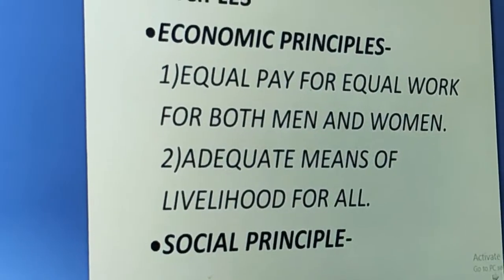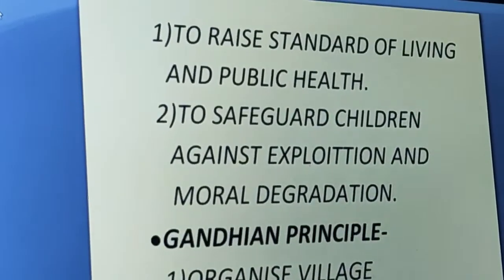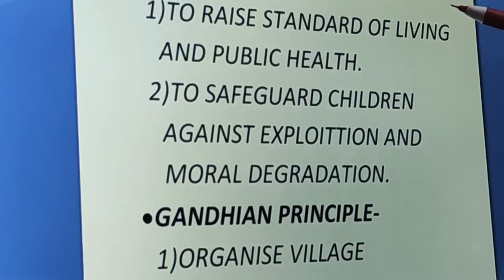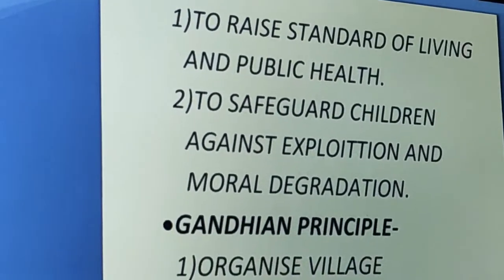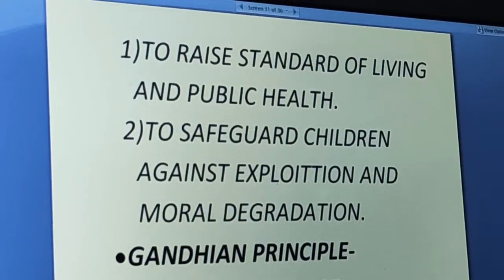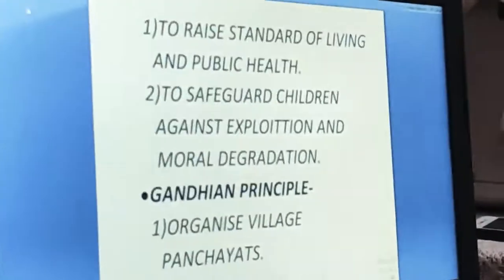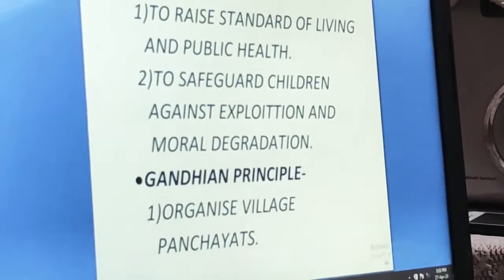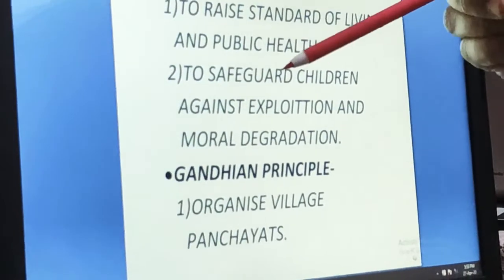The next category is social principles. The first social principle is to raise the standard of living and public health — public health should be given more priority and no people should work under hazardous conditions. People's living standards should be raised and proper facilities should be given to the people. The second social principle is to safeguard children against exploitation and moral degradation.